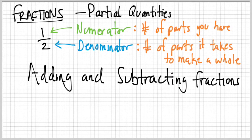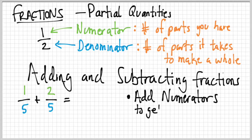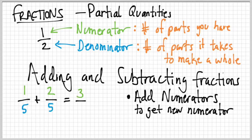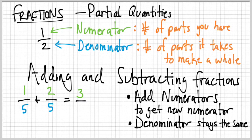Let's look at adding and subtracting fractions — the rules are quite simple. We'll look at an example: one-fifth plus two-fifths. The rule for adding fractions: first, simply add the numerators to get a new numerator. So one plus two is three. The denominator just stays the same, so it stays five. One-fifth plus two-fifths is three-fifths.